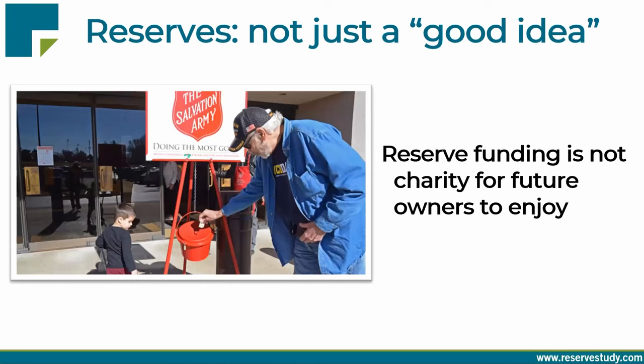Many of you are thinking: why should we set aside funds for the future for others to enjoy? Reserve funding is not charity for future owners — you own the property now, it's deteriorating every day, and boards and managers need to care for it. Homeowners have agreed to pay for that deterioration as members of the association. They can leave if they don't want to pay. So set the budget to pay the ongoing deterioration bill — it's an ongoing usage cost, the cost of owning a home in the association.